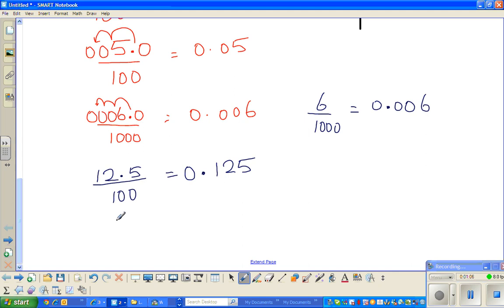If it is 179 over 100, so here the decimal point is after 9, it's sitting here, it's invisible. This decimal point will move two places to the left. Why? Because 100 has two zeros. So that becomes 1.79.